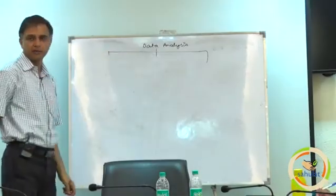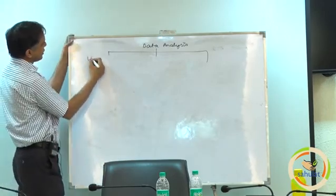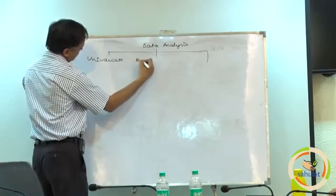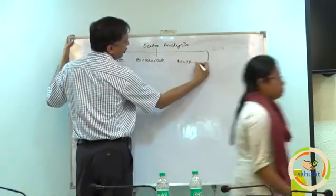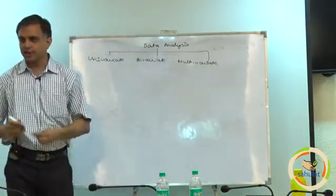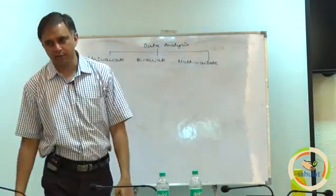There are three types of variables: univariate, bivariate, and multivariate. You take any book of statistics and it talks about these three things - univariate, bivariate, and multivariate.